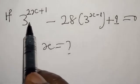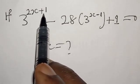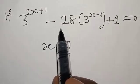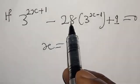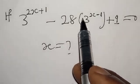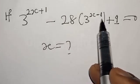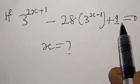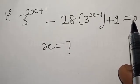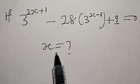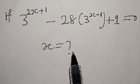If 3 raised to power 2x plus 1, minus 28 into 3 raised to power x minus 1, plus 1 is equal to 0, then x is equal to what?